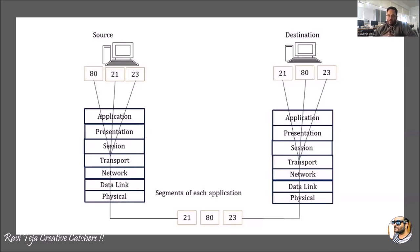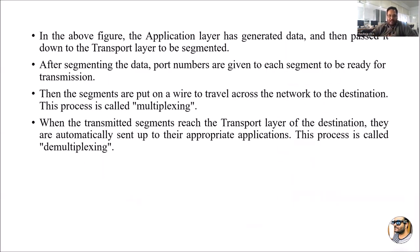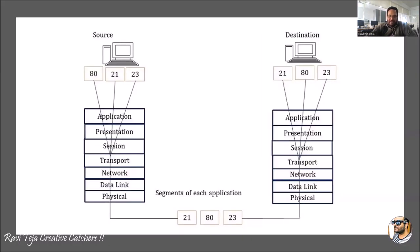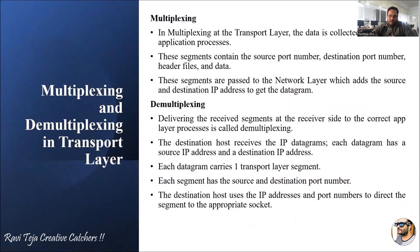At the destination, data is received separately based on the assigned port numbers. At the source end, all the data from separate applications goes to the transport layer, where multiplexing happens and all the data is combined into a single form. Based on the port numbers, the combined data is transmitted to the destination. This is the basic concept of how multiplexing and demultiplexing is used in the transport layer. Thank you.